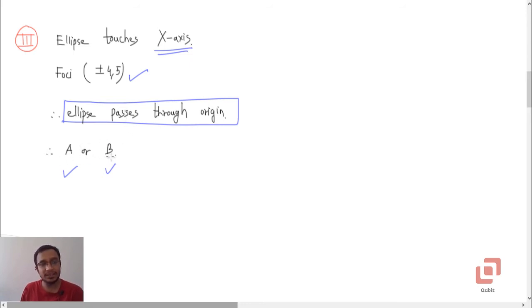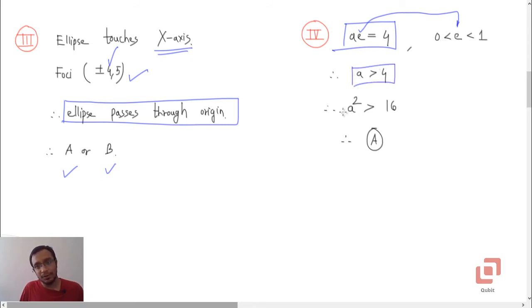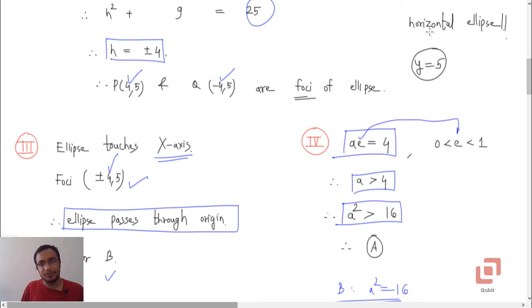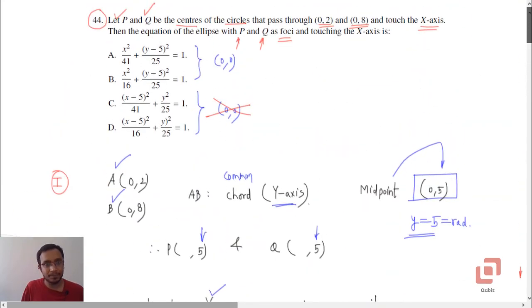Now, to decide whether it is A or B, we just look for the lengths of the major and minor axis respectively. And we find that it is option A which is correct. Alternately, you can say that if AE is equal to 4, which is the x-coordinate of the focus. What is it telling you? If AE is equal to 4 and because the eccentricity of any ellipse is always between 0 and 1, A has to be greater than 4. So, A squared has to be greater than 16. And if you go to option B, you will find that A squared is actually equal to 16. So, this cannot be right. So, it is option A.